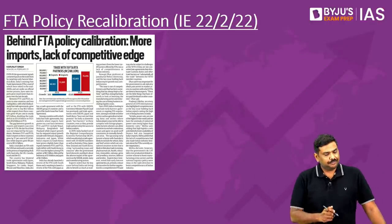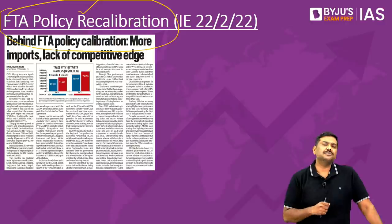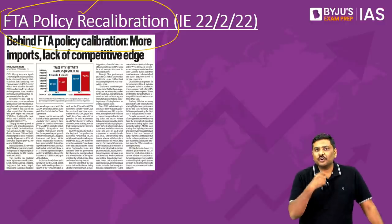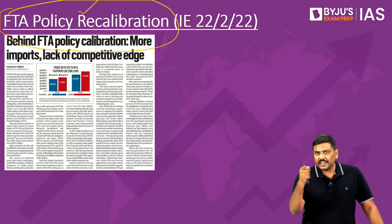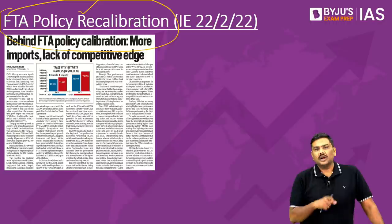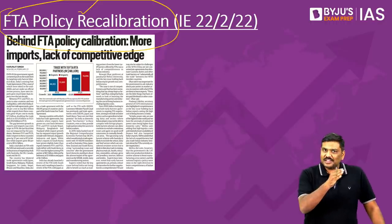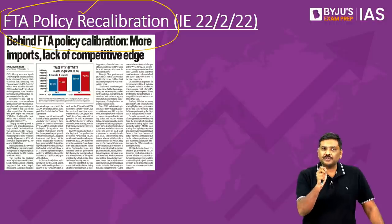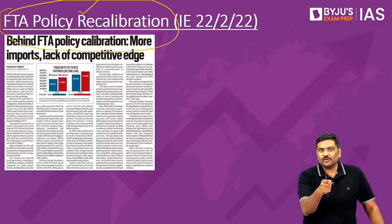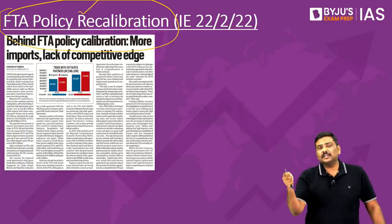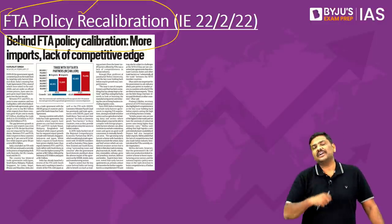The first very important article is related to FTA policy recalibration. In simple terms, in recent times, the government of India has started reworking on the free trade agreements that it has signed with various other countries. What is the point of this particular discussion?